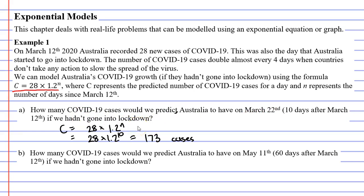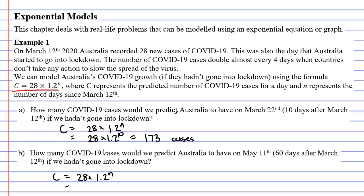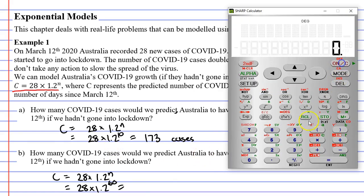Question B is asking the same thing except we want to see what would have happened on May 11th — 60 days after March 12th — had we not gone into lockdown. How many cases do we predict we would have had? Starting by copying the formula down: C equals 28 times 1.2 to the power of N. 60 days later means 1.2 to the power of 60. Let's see how many cases we get in this situation.